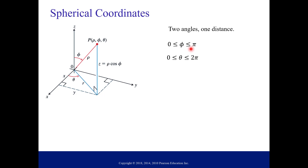Phi can go anywhere between 0 and π, and theta is still 0 to 2π. Why does phi stop at π? If we're sweeping out angles from the positive z-axis, going all the way down to the negative z-axis is π. If we kept going past π, we'd just be creating redundancy with our solid because we're also rotating with theta. So we stop phi at π and use theta to sweep out the rest of the solid. Rho, this distance, can be any positive number from 0 to infinity.